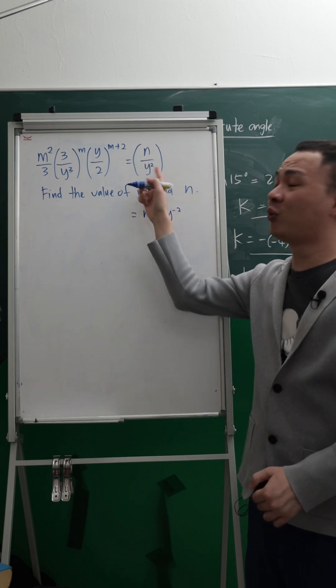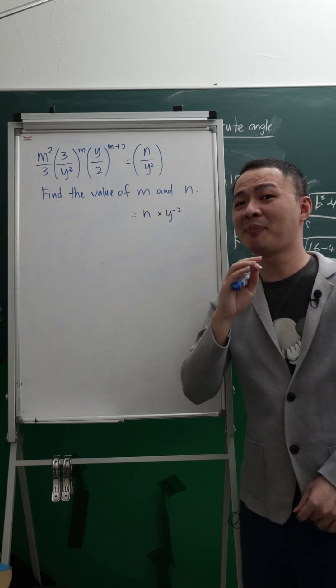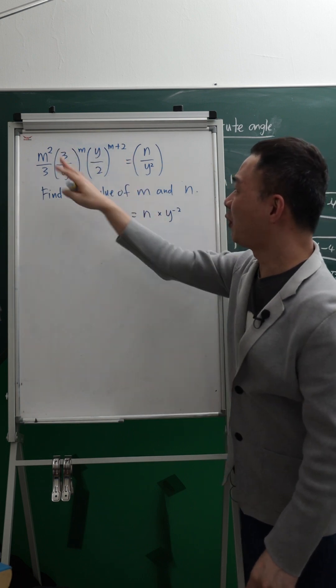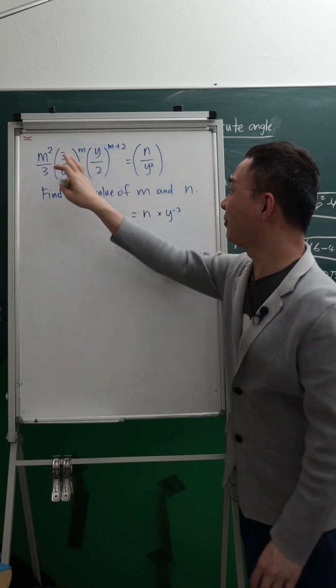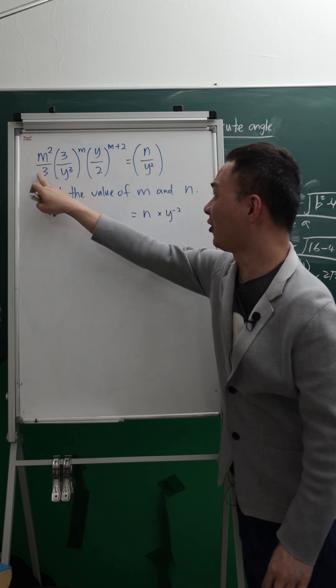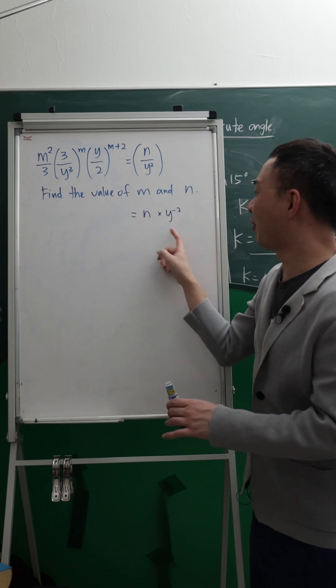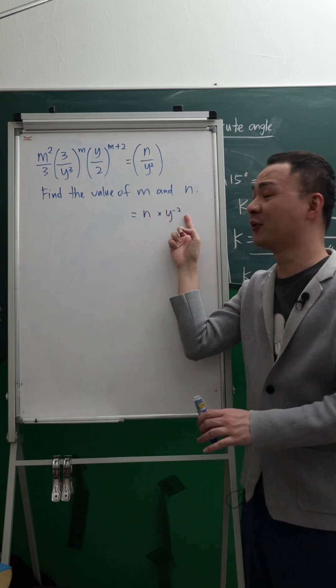Because Y square at the denominator, its power should have negative. Then over here, I will only differentiate: this one is constant, this is variable Y. So whatever have Y, I will group them out. Then I will compare with the power of negative 2.